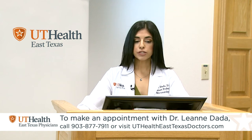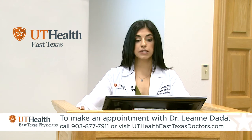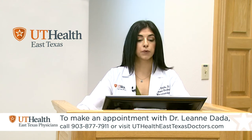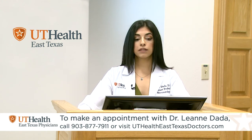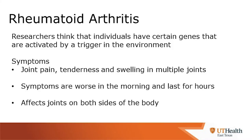Researchers think that patients get RA because the individual has certain genes that predispose them to rheumatoid arthritis, and that gene is triggered by something in the environment. Symptoms include joint pain, tenderness, and swelling in multiple joints. The symptoms can be worse in the morning and the swelling and pain can last for hours. It is a symmetrical disease, so it affects joints on both sides of the body.